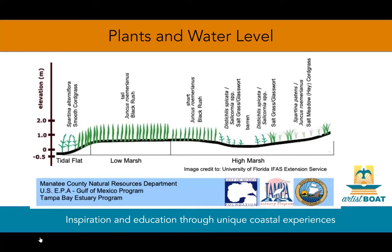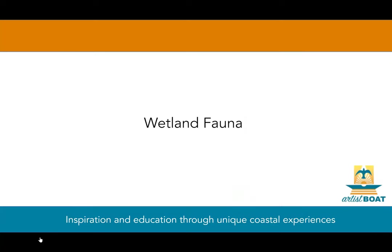Here is where the various plants are found according to their location and the water level of the marsh. Smooth cordgrass is on the far left over in the tidal flats, and on the right-hand side of the diagram we have salt meadow cordgrass in the high marsh.